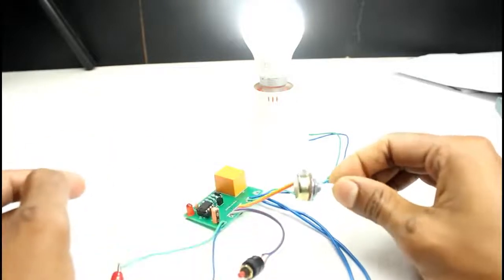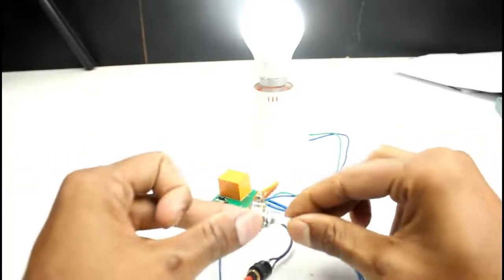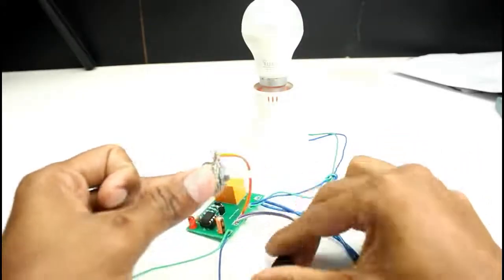You can set the time by using this potentiometer. Please watch the full video. I will show you how you can change the time from 10 seconds to 10 hours. Also I will provide the circuit diagram.